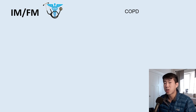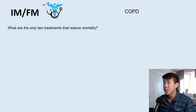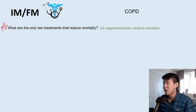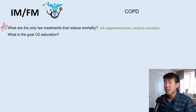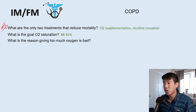Now COPD — one of the most common diagnoses we treat in the hospital. There are only two treatments that reduce mortality in COPD, and that's an important question: oxygen supplementation and nicotine cessation — stopping smoking is very important. The goal oxygen saturation in these patients is 88 to 92%. Giving COPD patients too much oxygen is actually a bad thing.